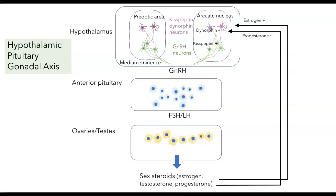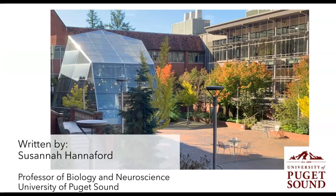In addition to these hormones feeding back directly onto the hypothalamus, there are many other neurons in different parts of the brain that also have receptors for estrogen, progesterone, or testosterone, and those could also be modulating the activity of these neurons in the hypothalamus. The neuroendocrine system is complicated and fascinating, but I think we'll leave it there. Thank you.